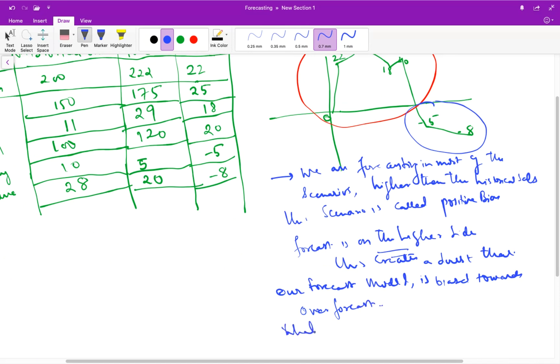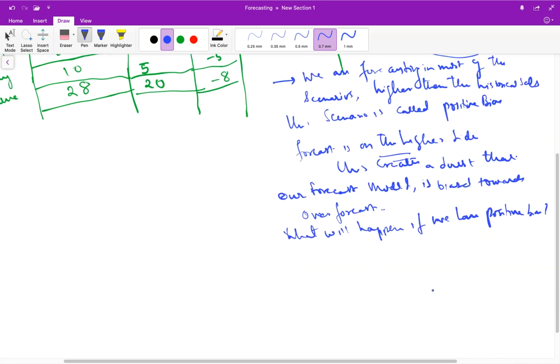And what will happen if we have positive bias? It means we may build higher inventory, which costs to increase the cost of supply chain.